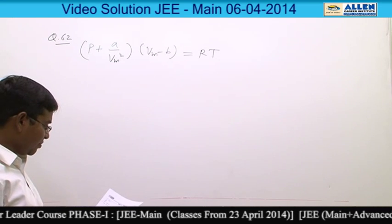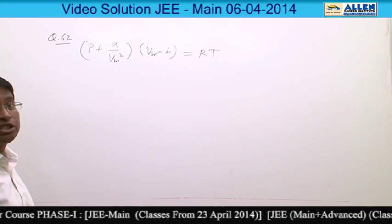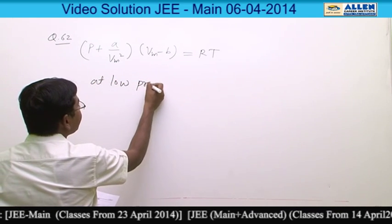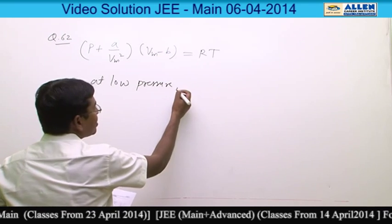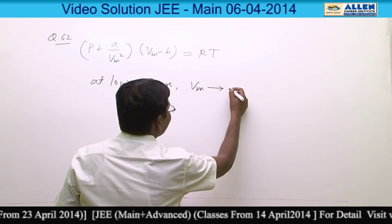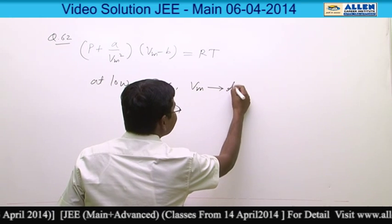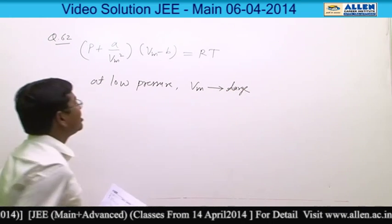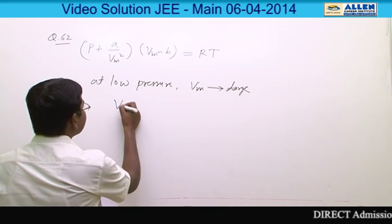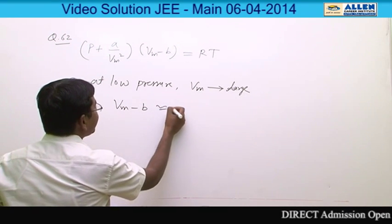At low pressure, Vm tends to infinity or very large. And when Vm is very large, B can be neglected and so Vm minus B is approximately Vm.